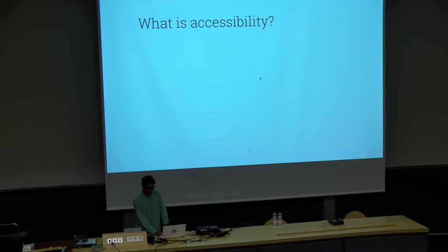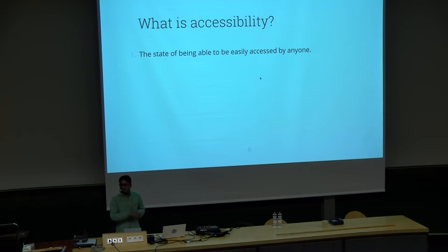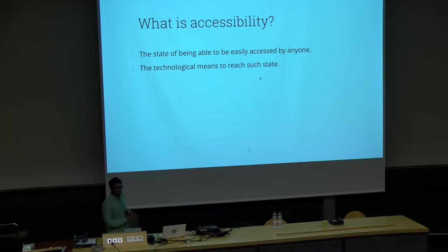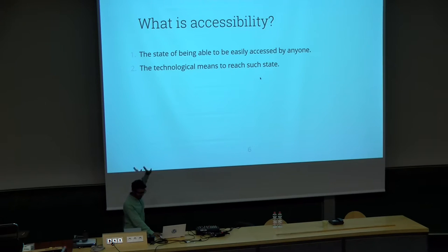So we've been talking about accessibility. What exactly is accessibility? The first point is accessibility is the state of being able to be accessed by anyone, irrespective of their situation, their abilities or disabilities. Then accessibility is also the technological means to reach such a state — accessibility toolkit ATK, ORCA, speech dispatcher, eSpeak — I could throw a lot of technical words, but they all come under this point. Next is the socioeconomic framework to reach such a state, and this is one major concern that people tend to forget when talking about accessibility.